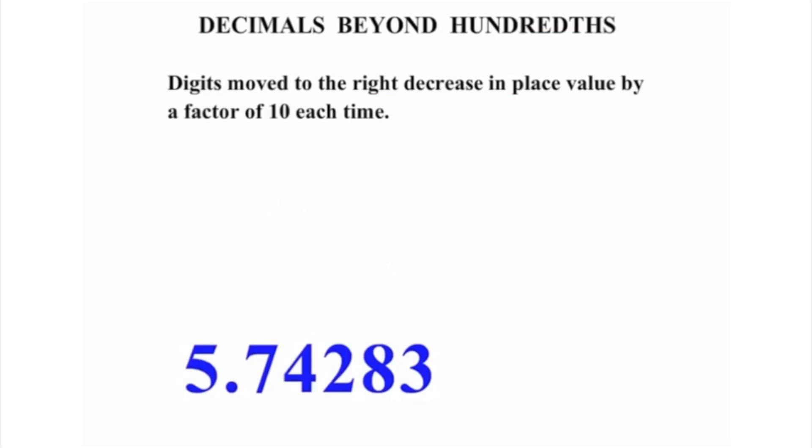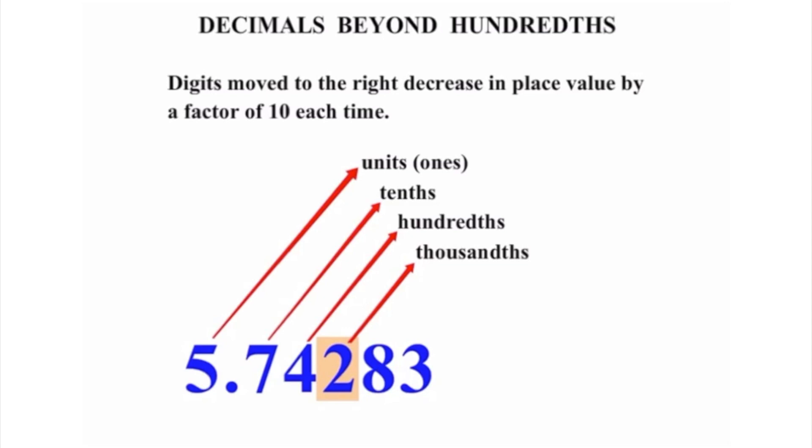Let's consider this number 5.74283. The 5 is in the units or ones place, and we've got the decimal point. Past the decimal point, the 7 is in the tenths place. The next digit, 4, is in the hundredths place. The 2 is in the thousandths place. That 8 is in the ten thousandths place, and this 3 is in the hundred thousandths place. Again, that would continue on, but we'll stop at that point there.